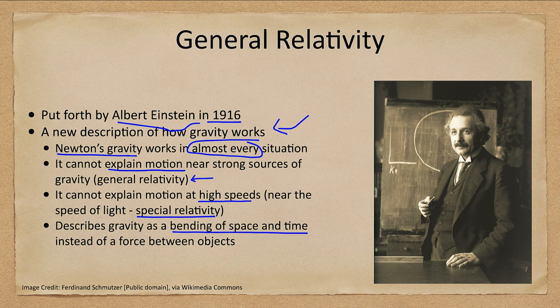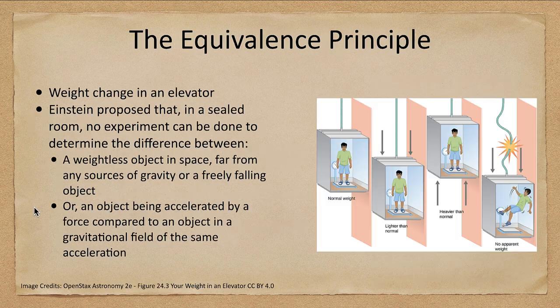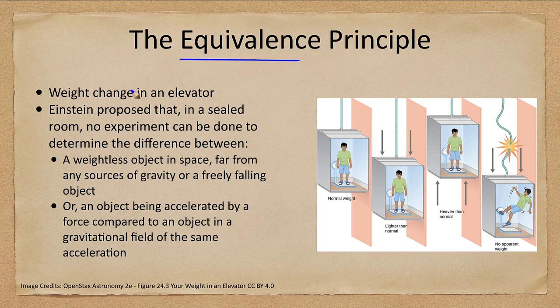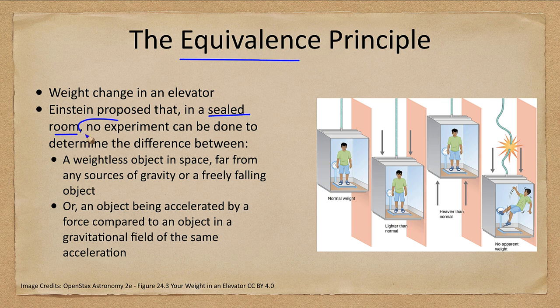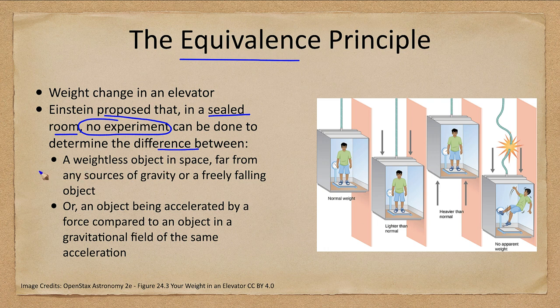So first of all, one of the first things we start off with is the postulate of general relativity, which is the equivalence principle. Essentially what was proposed is that if you are in a sealed room, so you can't look out, there is no experiment that you can do that will determine the difference between these two things: one is an object in space far away from any sources of gravity, or a freely falling object.